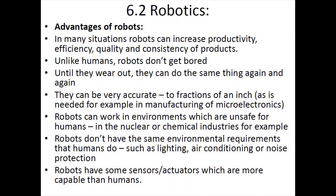As per the Cambridge criteria, you need to know the advantages and disadvantages of robots to answer questions accurately. Advantages: in many situations robots can increase productivity, efficiency, quality, and consistency of products. Unlike humans, they do not get bored or tired of doing the same thing repeatedly. They can be accurate to a fraction of an inch and can work in environments unsafe for humans, such as nuclear facilities or chemical industries, as they do not have the same environmental requirements — such as proper lighting, air conditioning, or noise protection.